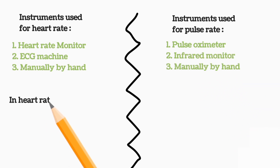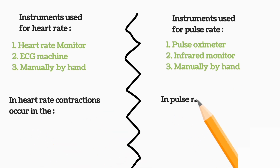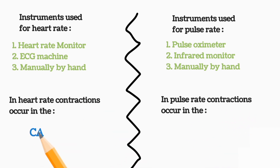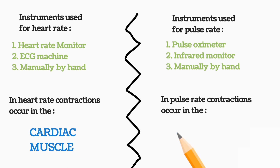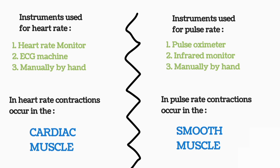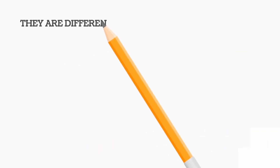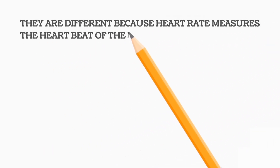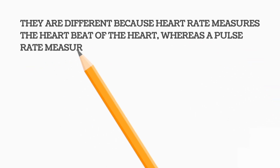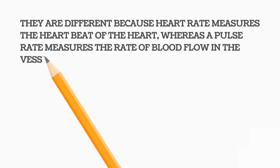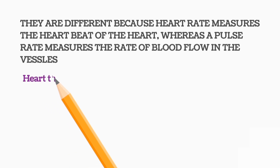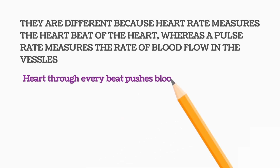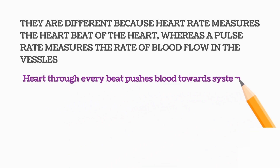In heart rate, the contractions occur in the cardiac muscle, while in pulse rate, the contractions occur in the smooth muscle. They are different because heart rate measures the heartbeat of the heart, whereas pulse rate measures the rate of the flow of blood in the vessel.